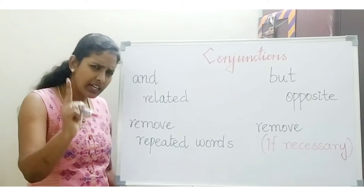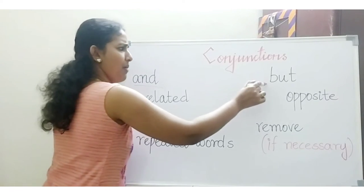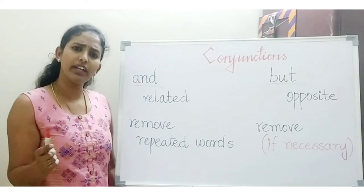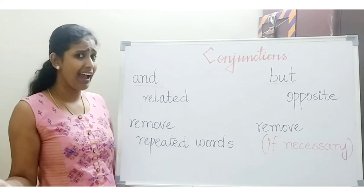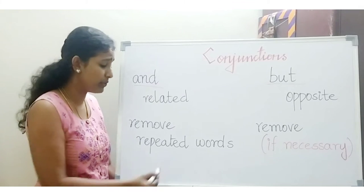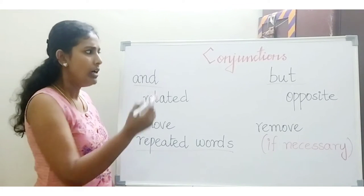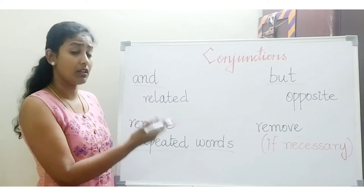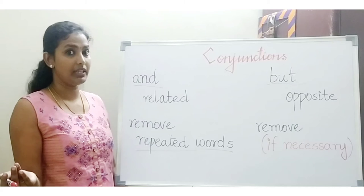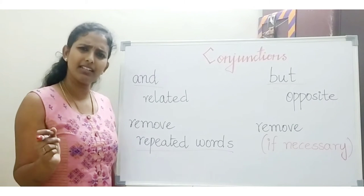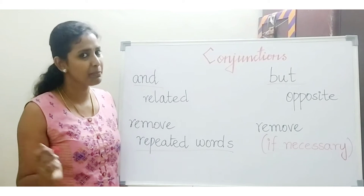There is one rule when we use 'and' or 'but' while joining two sentences. When we use 'and,' we remove the words that are repeated in both sentences. When we use the conjunction 'but,' we don't always remove the repeated words, but at times, if it is really necessary, we remove the repeated words.